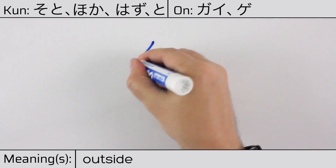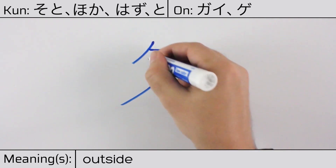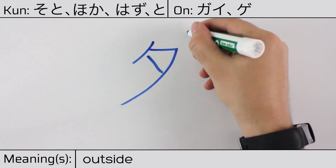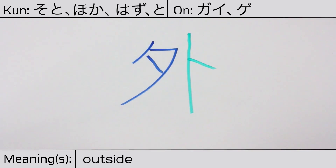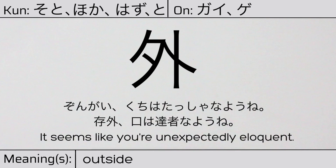You can remember this Kanji by the following hint: In the early evening, fortune tellers sit outside. Our example sentence is: 損害, kuchi wa tashya no yōu ne. It seems like you're unexpectedly eloquent.